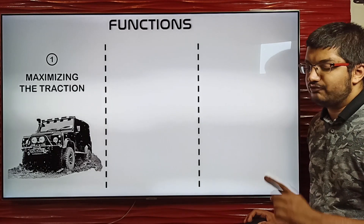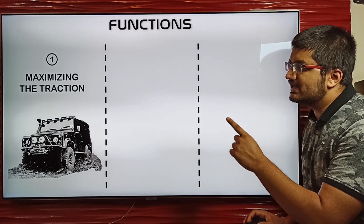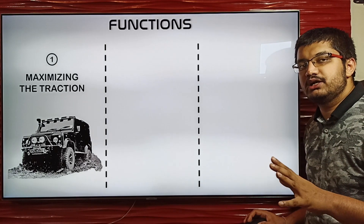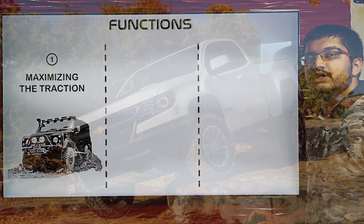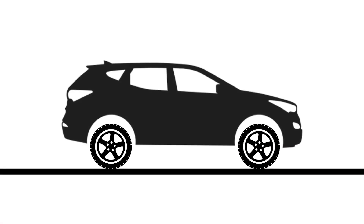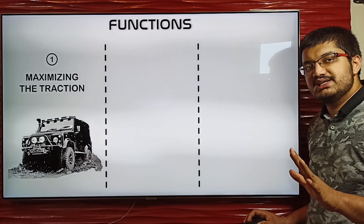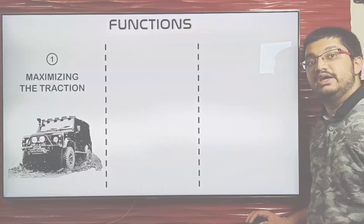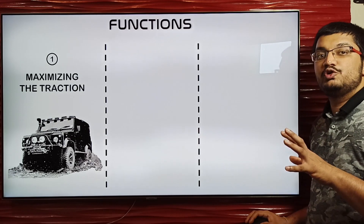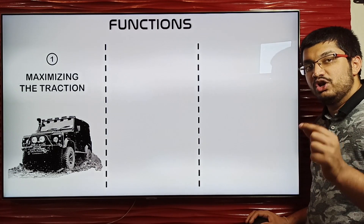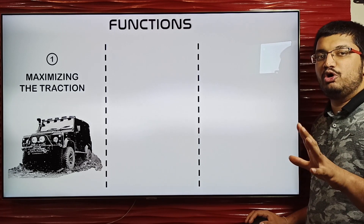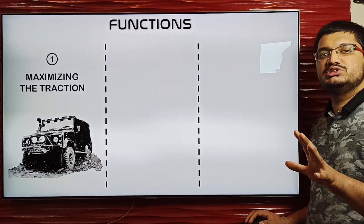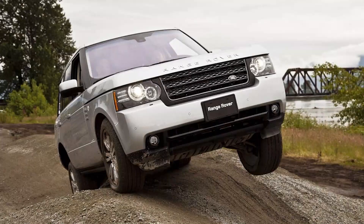The first main function is maximizing traction — that is, maximizing the contact of all wheels with the ground. The suspension system maintains the contact of all wheels with the ground by enabling the wheels to move independently with respect to the body or frame of the vehicle, hence maximizing control and power utilization. If suspensions were not there, one of the wheels could lose contact with the ground, losing power if it is a driven wheel or losing control if it is a steered wheel.